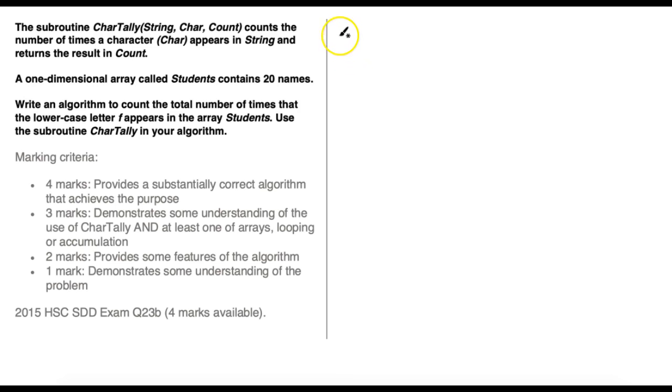Okay, so let's start writing this algorithm out. We can start with the keyword begin. And we can give this algorithm a name. It's going to be finding a particular letter in an array of names. As I said, we need to keep a total of how many times the lowercase letter f has occurred in all the names. So we're going to need a variable to keep track of that. So we can create one called total and set it to zero to start off with.